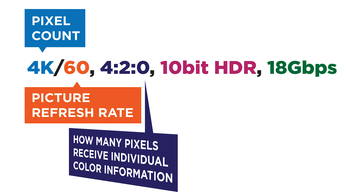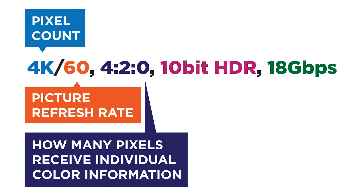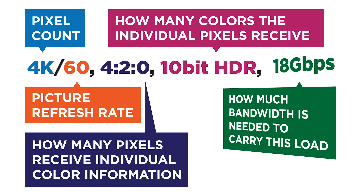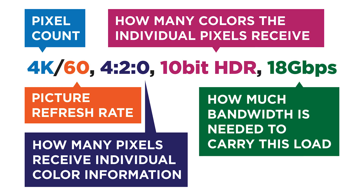This number represents the number of pixels receiving color information. The bitrate refers to the number of colors available to each pixel — the higher the better, making a big difference. Finally, gigabits per second is the data bandwidth needed to carry all of this information to create the picture. As anything increases in the spec, a higher bandwidth is needed.